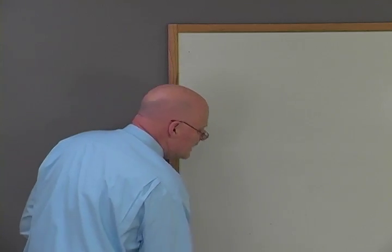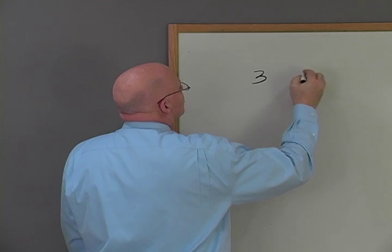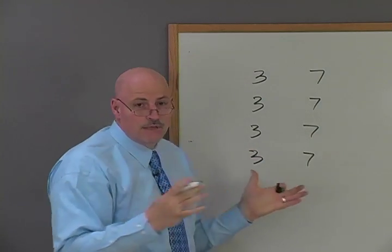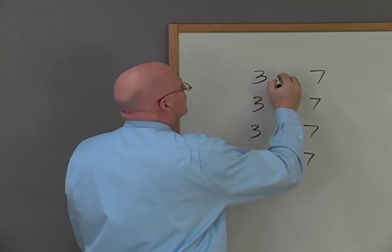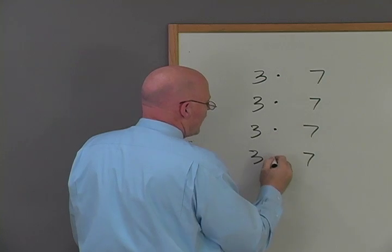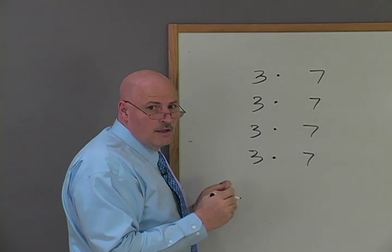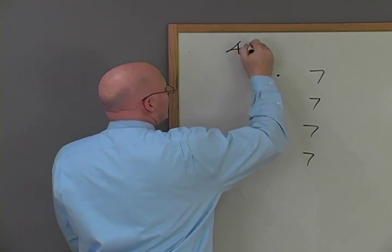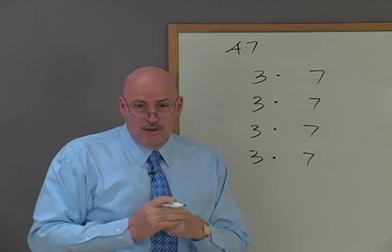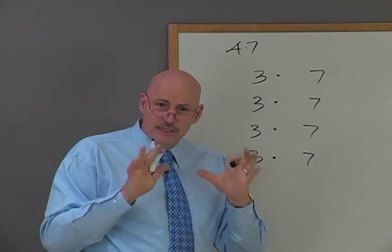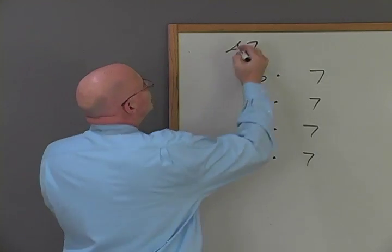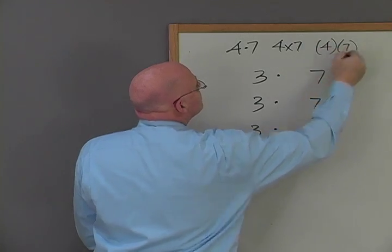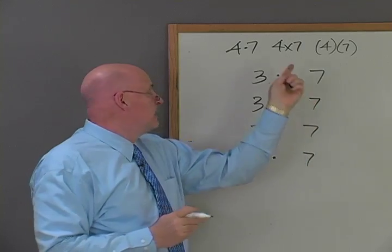We're going to do three times seven four ways. What is three times seven, everybody? And by the way, what's that dot mean? If the dot was down low it would be decimal, but if it's floating between two numbers, like four times seven, it's another way to show multiplication. There are three ways to show multiplication: you can do a floating dot, you can do an X, or you can do parentheses side by side. All three of those mean the same thing.